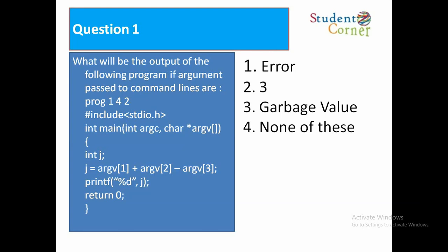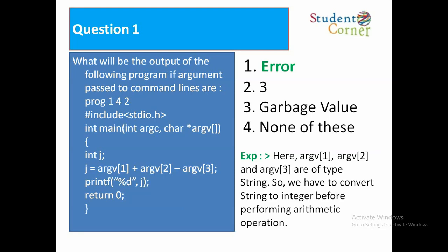So arg1 contains 1, arg2 contains 4, means 1 plus 4 equals 5, minus arg3 which is 2, so 5 minus 2 equals 3. But arg1, arg2, and arg3 are of type string. So we have to convert string to integer before performing arithmetic operations. We are converting these strings into integers by using the atoi function.